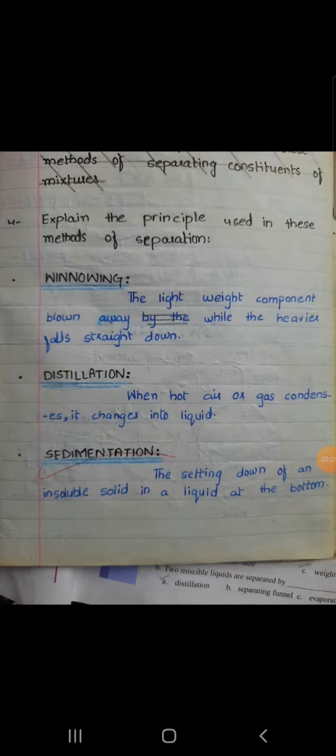Question number four: Explain the principle used in these methods of separation. Winnowing - the lightweight components are blown away while the heavier fall straight down. Distillation - when hot air or gas condenses it